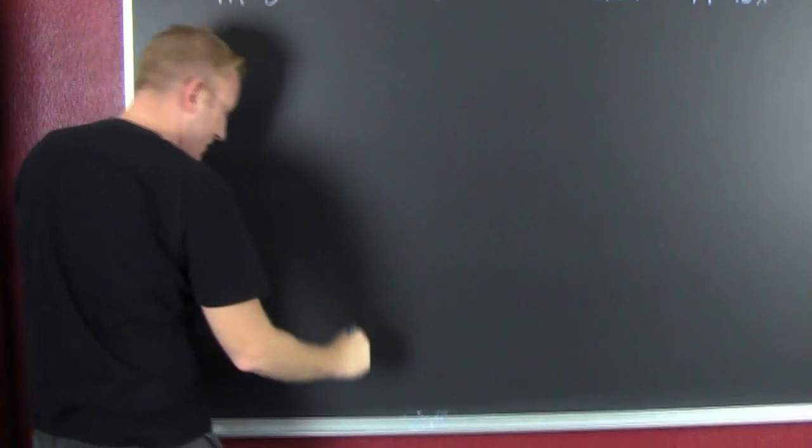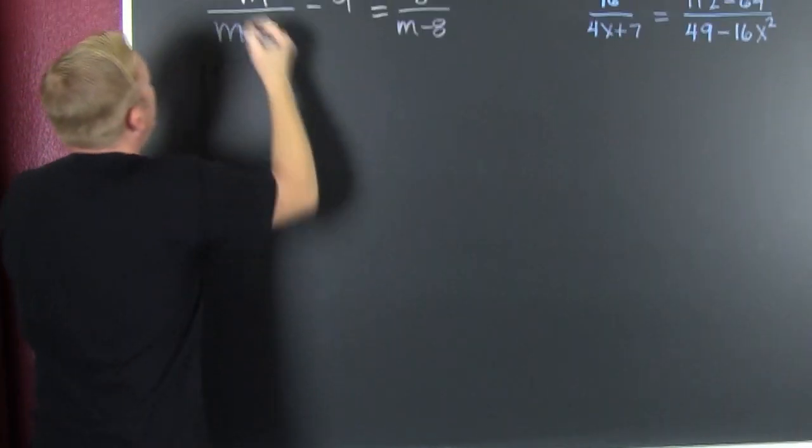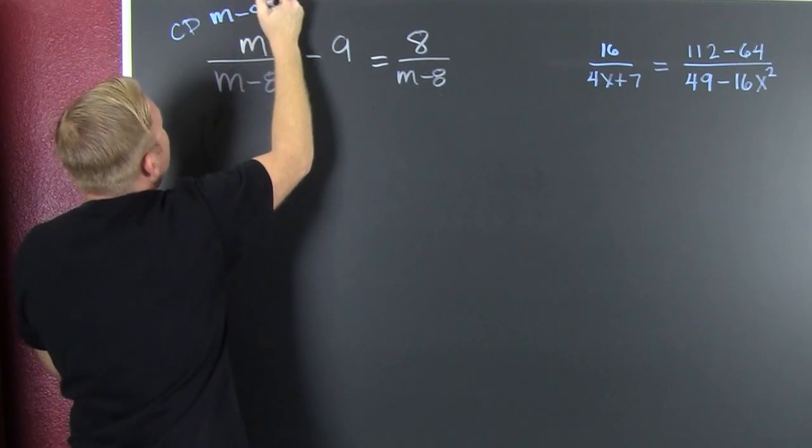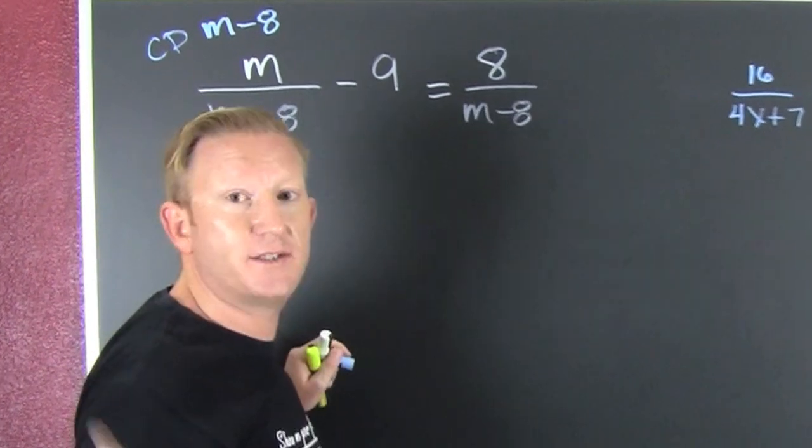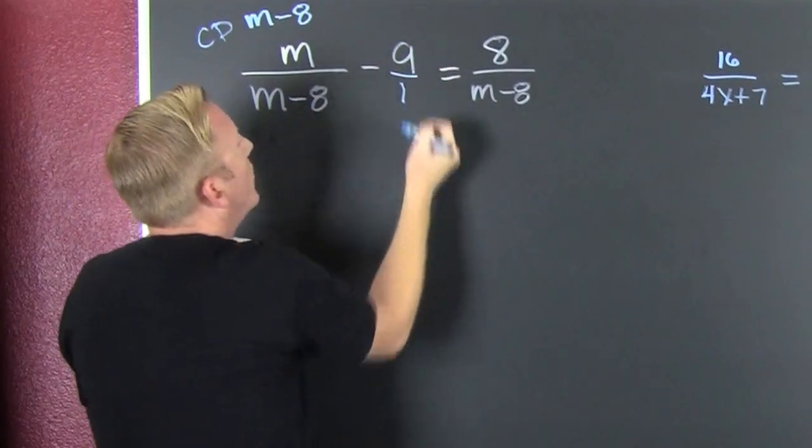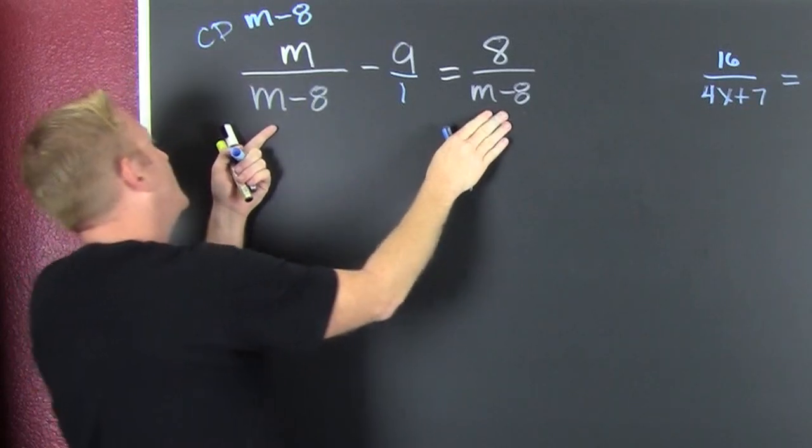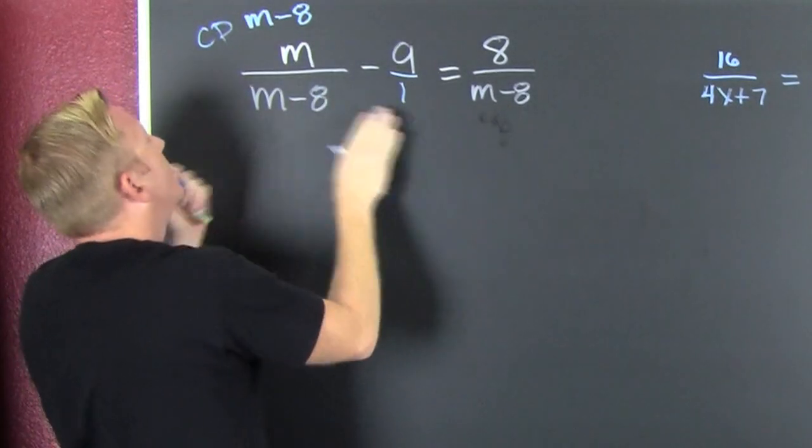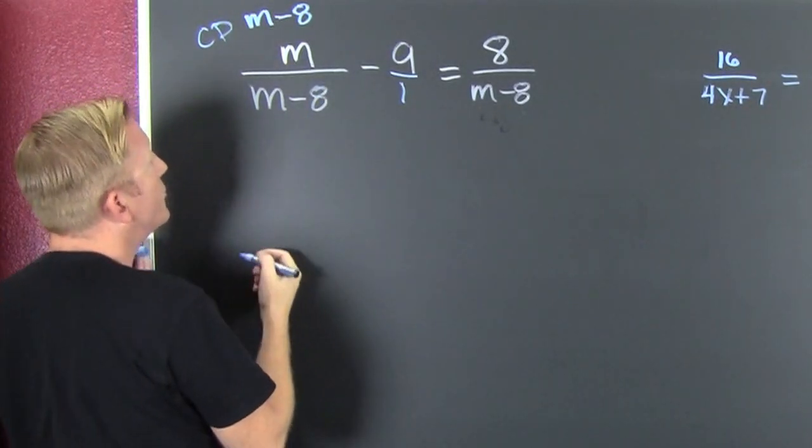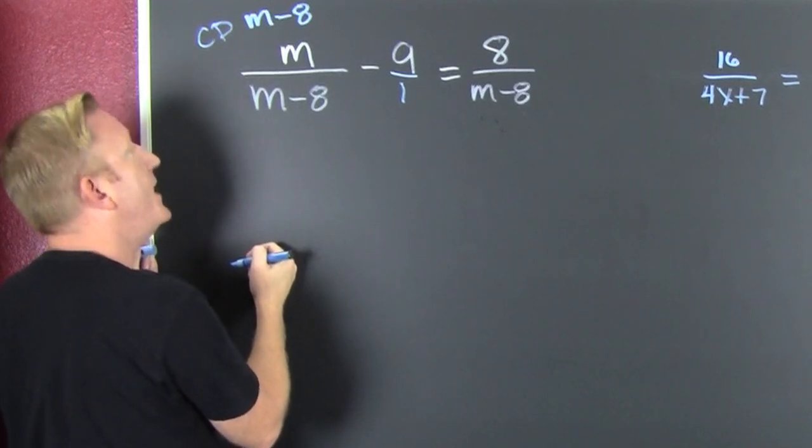The common denominator of all denominators is going to be m minus 8. Why? Because this is 9 over 1. So the common denominator is going to be the least common multiple of the denominator. So I'm going to go through and I'm going to multiply every term by m minus 8.